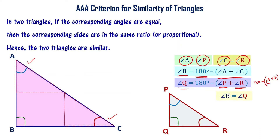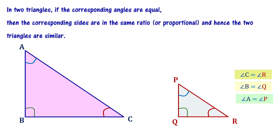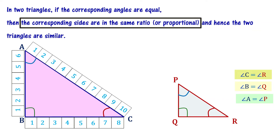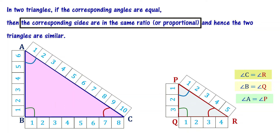So angle B is equal to angle Q. The corresponding angles of these two triangles are equal, and therefore the corresponding sides are going to be in the same ratio. Now let's take the measures of the sides of these triangles. AB is six units, BC is eight units, and AC is ten units. For the other triangle: QR is four units, PQ is three units, and PR is five units.